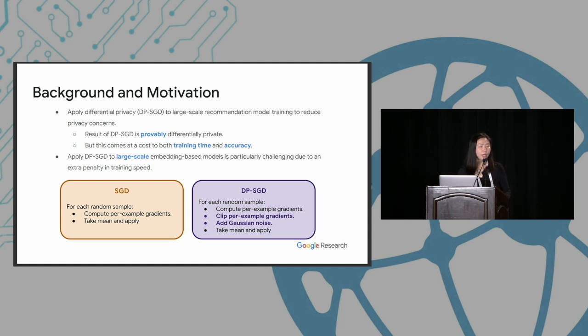A common tool to train a private model is using DPSGD. So the difference between DPSGD and normal SGD is that when computing the gradient at each training example, DPSGD will clip the gradient and add noise to every parameter. The good thing of DPSGD is that the result is provably differentially private. But these two steps also come at a cost of both the training time and the accuracy. Also it's even particularly challenging to apply DPSGD to large-scale embedding-based models due to an extra penalty in training speed, and I'll show you where this penalty comes from.